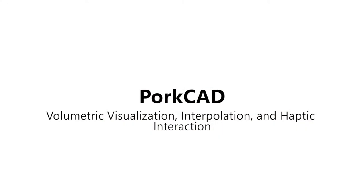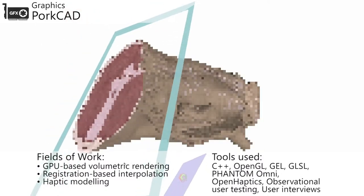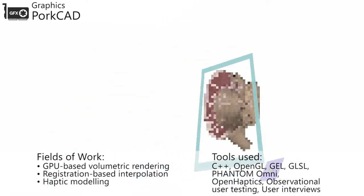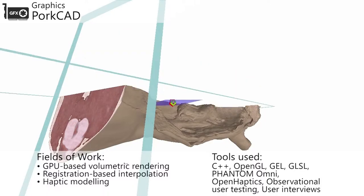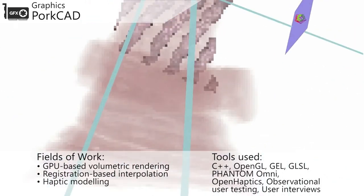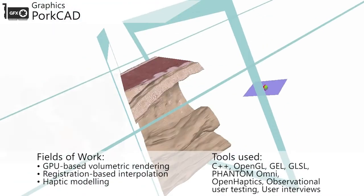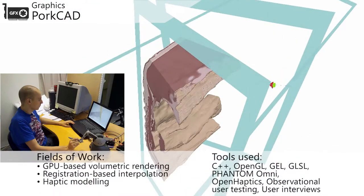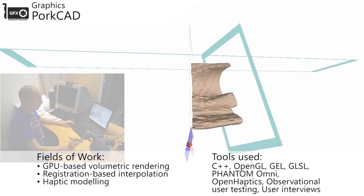PorkCAD — volumetric visualization, interpolation, and haptic interaction. Despite being global leaders in pork export, Danish Crown still relied on photos to communicate product development. As part of a digitization initiative, I implemented and tested a pork product prototyping interface visualizing actual CT-scanned pork data, interacted with using a haptic feedback pen.